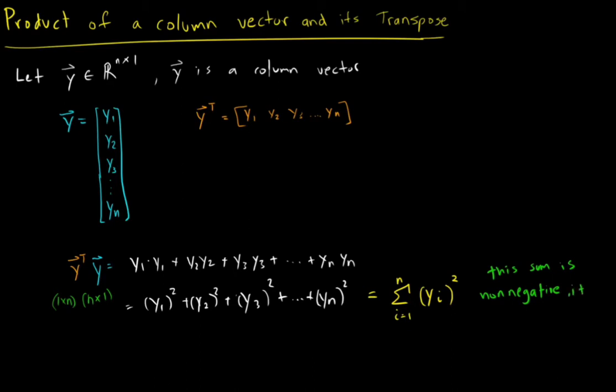How can it be zero? Well, if your y vector is a zero vector, then you're just adding and multiplying zeros. So the important thing is that this is non-negative—it can be positive or zero.